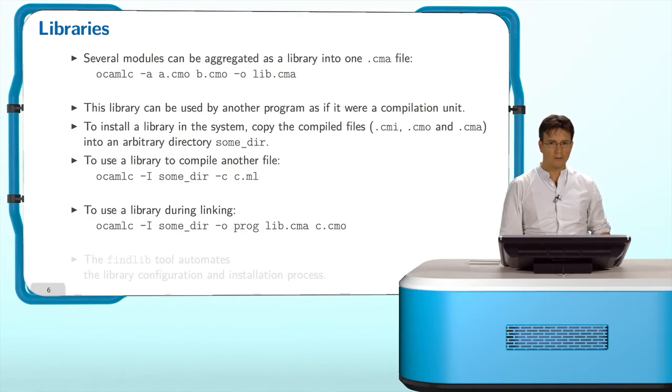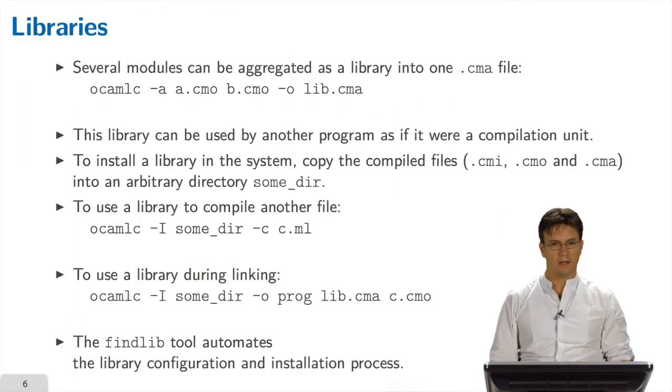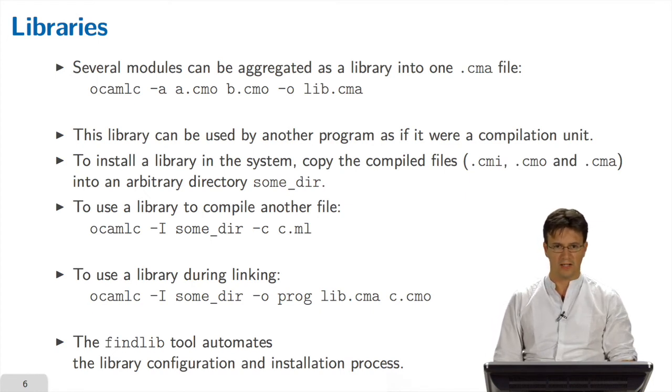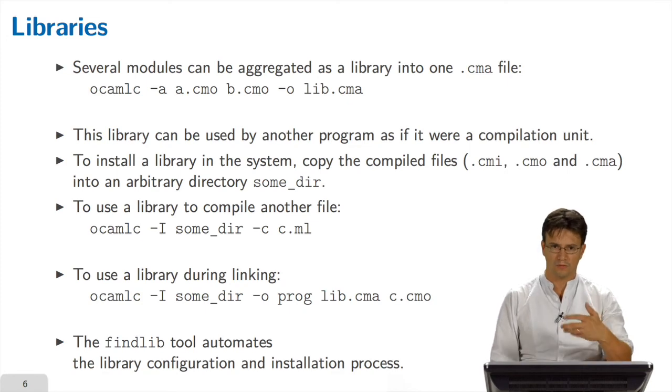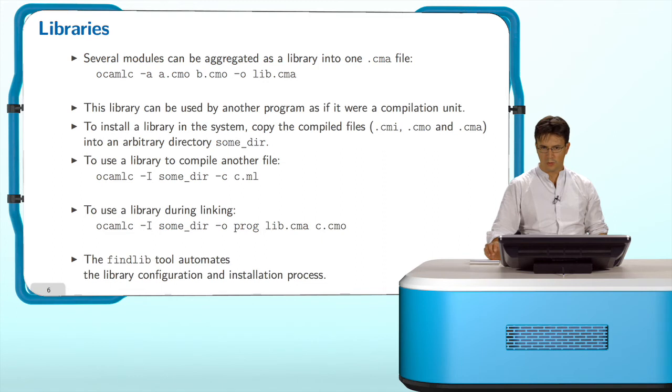When you produce the executable program, you also need to provide the library as an input. To do so, you use, again, the -I to configure the compiler to explain where you can find the library files, and you have to provide the library file too. This can be a bit exhausting, all that command line, all that configuration for all the libraries. Fortunately, there exists a tool called FindLib that will automate the generation of the compilation options. Also, FindLib will take care of finding a place where to install a library and indexing the libraries that are installed in your system.